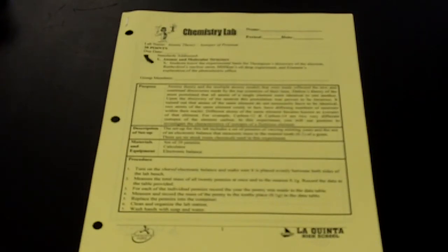It turned out that atoms of the same element do not necessarily have to be identical. Two atoms of the same element could in fact have different numbers of neutrons within their nuclei. Different atoms of the same element became known as isotopes of that element. For example, carbon-12 and carbon-14 are two very different isotopes of the element carbon.